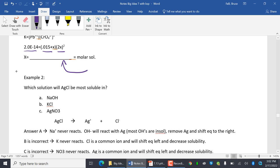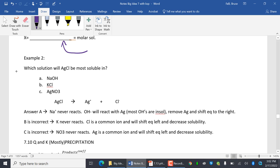Which solution will AgCl be most soluble in? NaOH, KCl, AgNO3. So when I'm doing this, I originally get rid of the ones I know I can always get rid of.